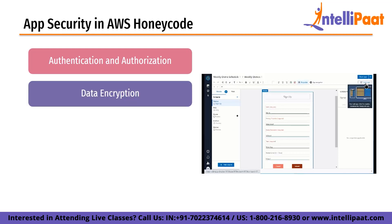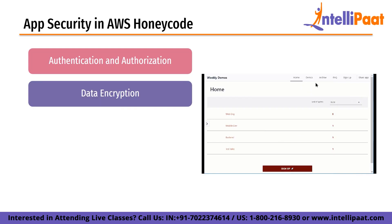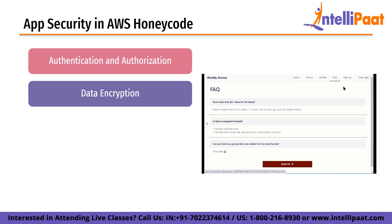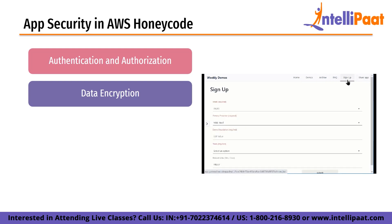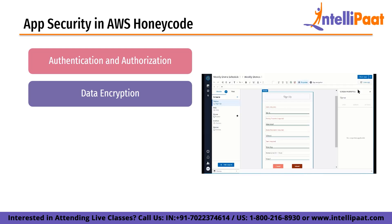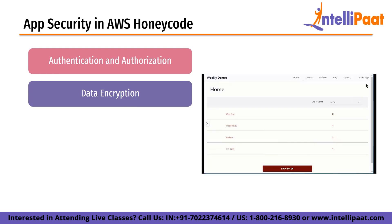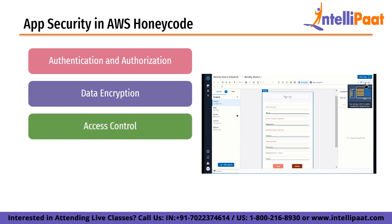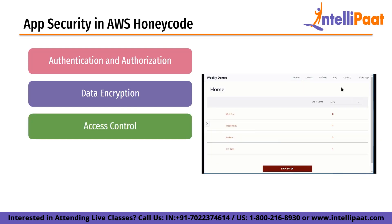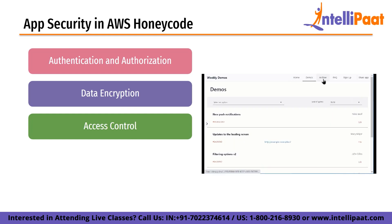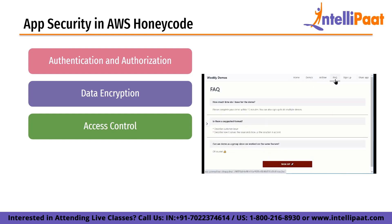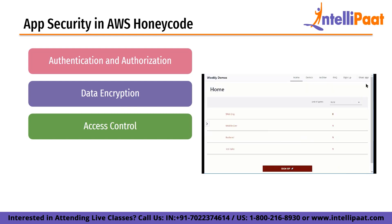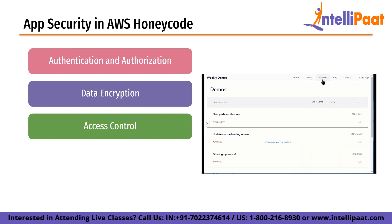Next is data encryption. Data encryption is a critical aspect of app security as it protects sensitive data from unauthorized access. In Honeycode, data encryption can be implemented using server-side encryption or client-side encryption. Server-side encryption encrypts data at rest while client-side encryption encrypts data before it is sent to the server. Third is access control, which ensures that only authorized users can access the app and its data. In Honeycode, access control can be implemented using the built-in access control mechanism or by integrating with an external access control provider.